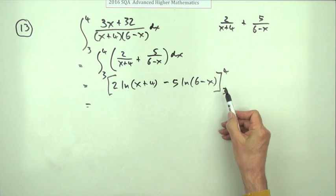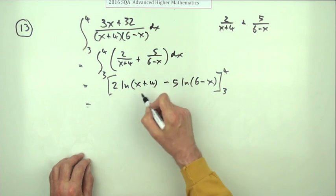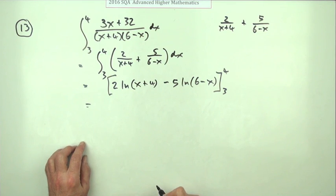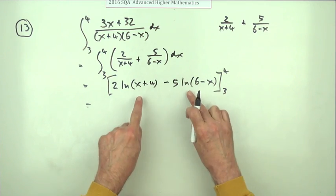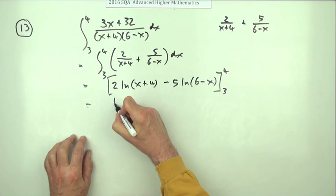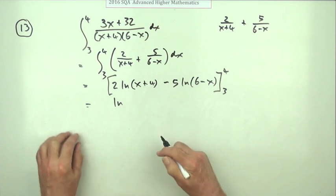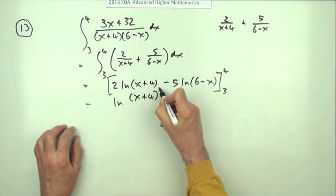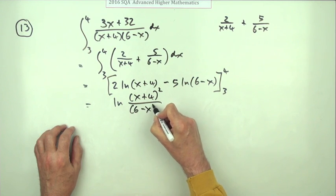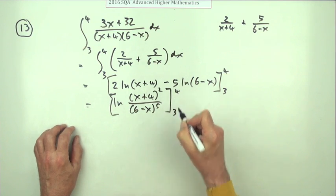I would maintain within those limits with that particular domain if you like they can't be negative. Probably safer for you to put those in. But I'm not going to evaluate it just now. You could put the numbers in and get a big long expression. I think I'll tidy this up first. I think I'll rewrite that as ln because I can pop the powers in and I can do the division as the subtraction of the logs. So I'm going to call that x plus 4 squared over 6 minus x to the power 5 and just evaluate that from 3 to 4.